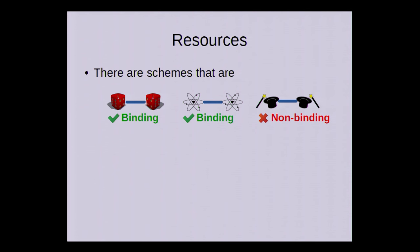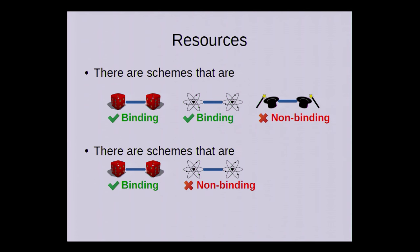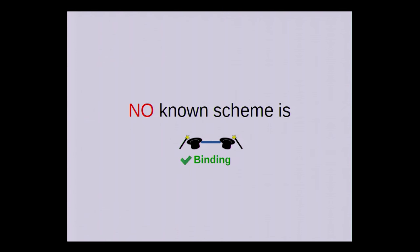What Crépeau et al. showed was that the scheme we just saw is binding against classical adversaries, binding against quantum adversaries, but non-binding against non-signaling adversaries. And also, if you tweak that scheme a little bit, we get one that is binding against classical adversaries, but it already fails in the quantum setting. And furthermore, there is no scheme known at all that is binding in the non-signaling setting.